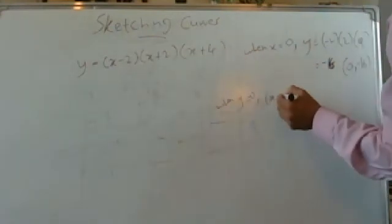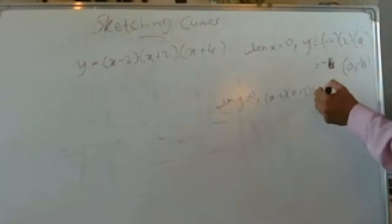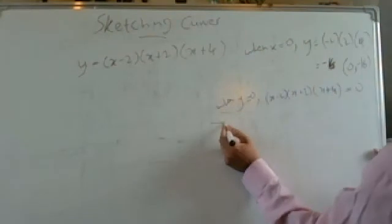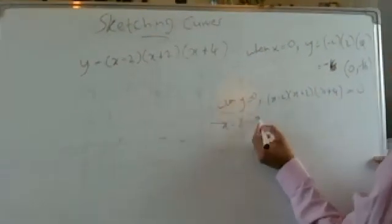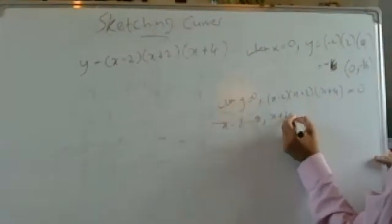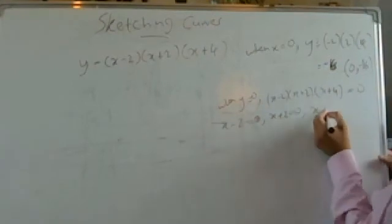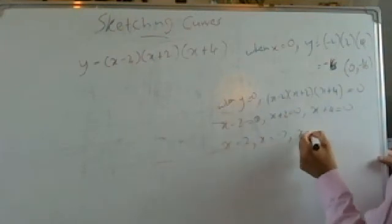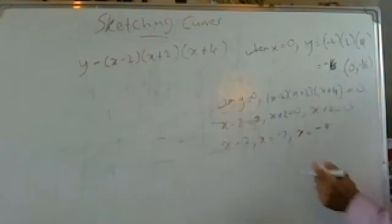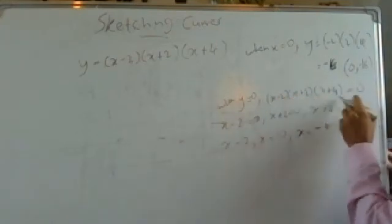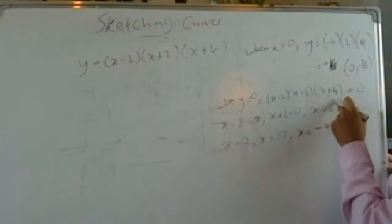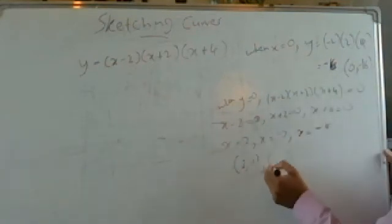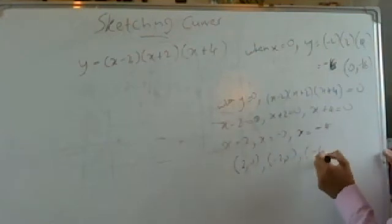When y equals 0, we have (x minus 2)(x plus 2)(x plus 4) equals 0. So x minus 2 equals 0, x plus 2 equals 0, or x plus 4 equals 0. That means x equals 2, x equals minus 2, or x equals minus 4. So our x-intercepts are (2, 0), (minus 2, 0), and (minus 4, 0).